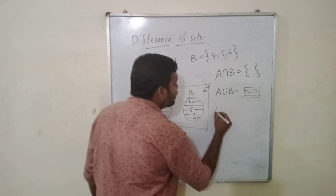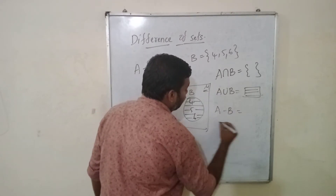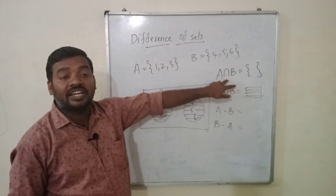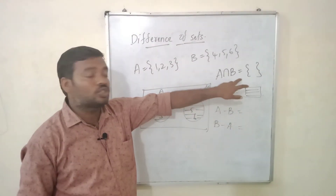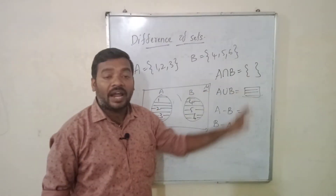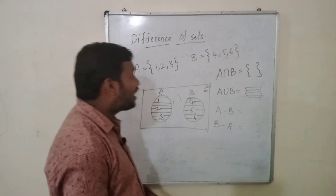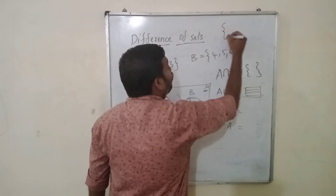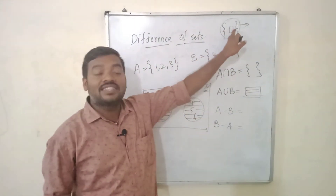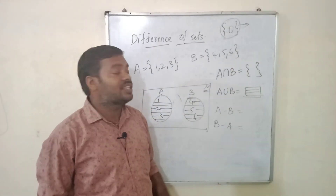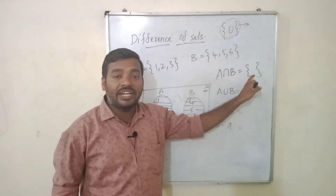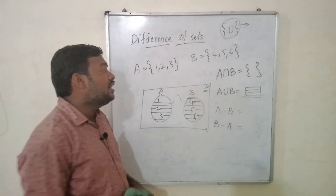Now if we go for A intersection B and difference of sets: because there is no intersection part for disjoint sets, A intersection B for disjoint sets is the empty set. The empty set is denoted by open flower brackets without any elements. You should not write any element in that — if you write 0, that is considered an element, not an empty set. Only if it is left empty is it considered the empty set.